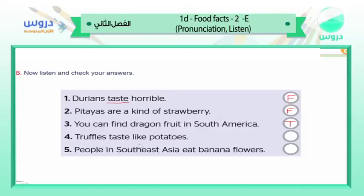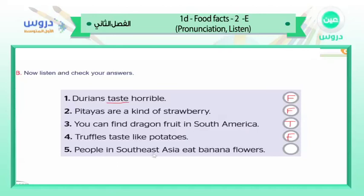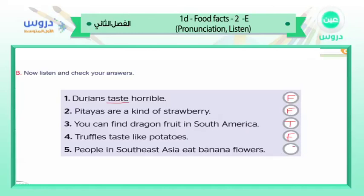Number four: 'Truffles taste like potatoes.' What do you think? False — very nice. Number five: 'People in southeast Asia eat banana flowers.' They eat it in southeast Asia — what do you think? This is true. Beautiful, excellent, very nice.